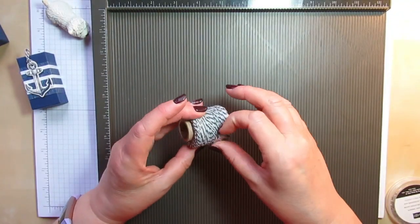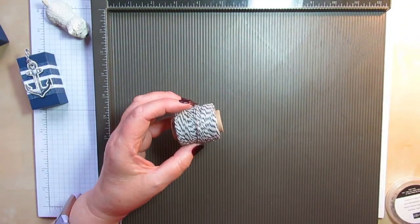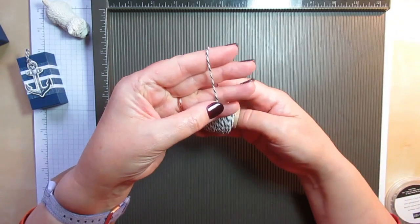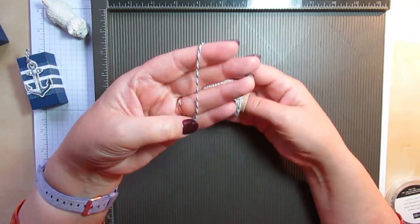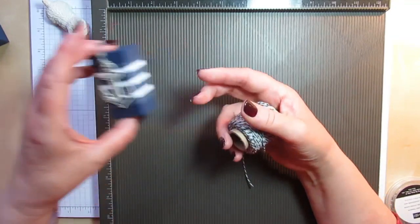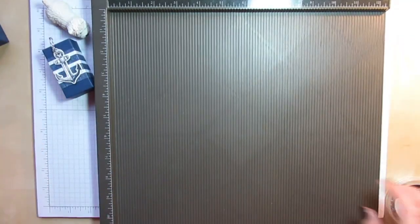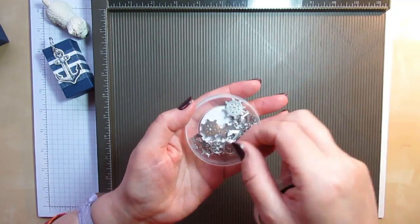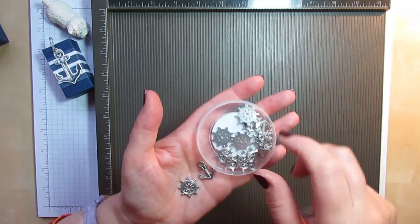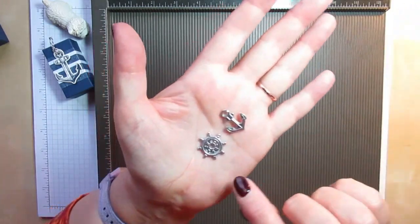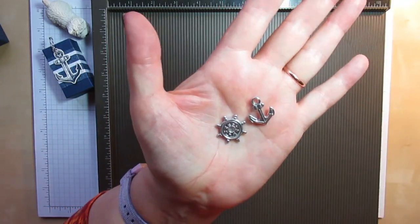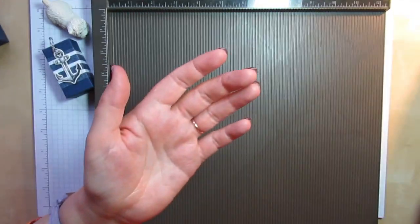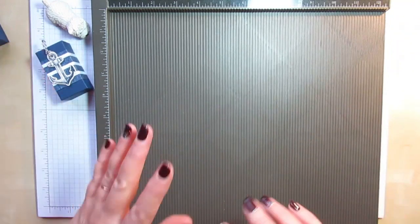And gorgeous baker's twine which is in the Night of Navy and Very Vanilla, which is just lovely. That's what I've popped on the top of my little anchor here. And last but not least, I've shown you these already in a previous video - the little trinkets. Some anchors and some ship's wheels. Just beautiful. I've not put one on today's box because I felt it was going to be a little bit too much.